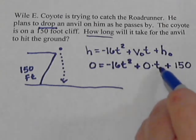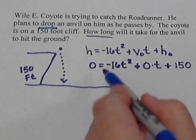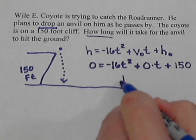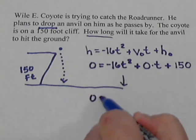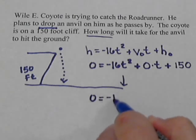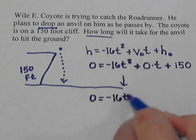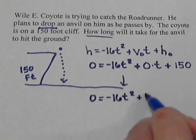So let's simplify this. 0 times the T is going to be 0. And so if we add 0, that doesn't do anything for us. So that really goes away, and we're left with 0 equals negative 16 T squared plus 150.